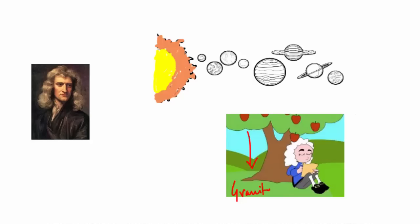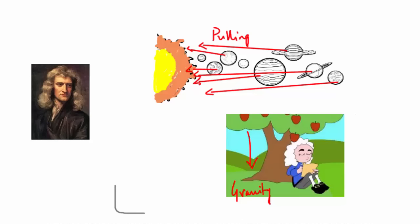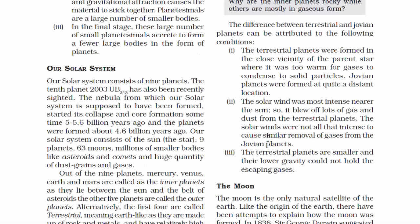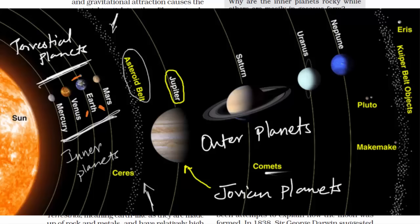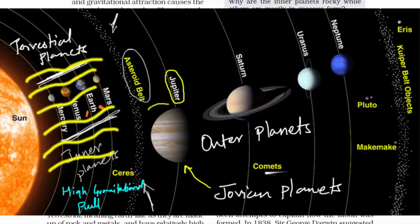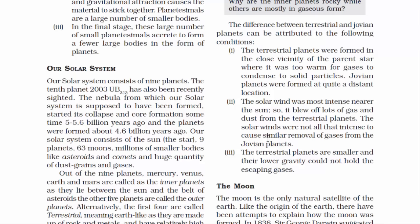Newton realized that the reason planets orbit around the Sun is related to why objects fall to Earth when dropped. The Sun's gravity pulls on the planets, just as Earth's gravity pulls down anything not held up by some other force. Heavier objects produce a bigger gravitational pull than lighter ones, so as the heaviest object in our solar system, the Sun has the strongest gravitational pull. Terrestrial planets are nearer to the Sun, so the Sun's heat blew away all their gases and dust. Jovian planets are far away from the Sun, so the solar winds were not as intense — that's why they still have a lot of gas and dust particles.